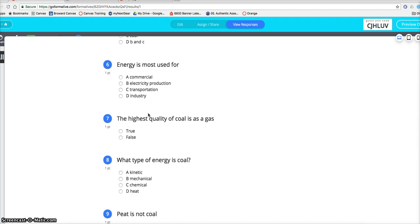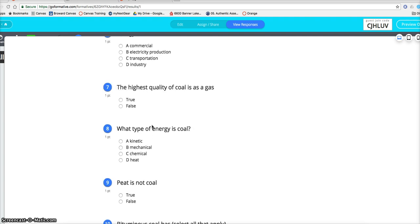The highest quality of coal is as a gas. False. Because the highest quality is always solid. Then the second? Liquid. Then the third? Gas. So that kind of tells you about efficiency too.